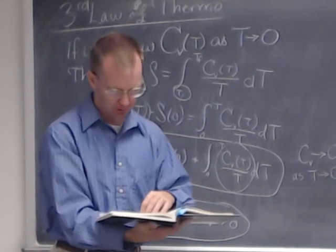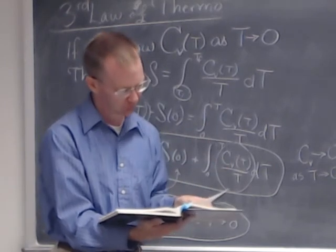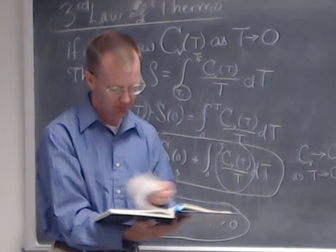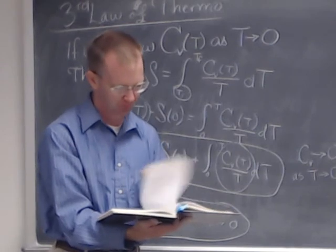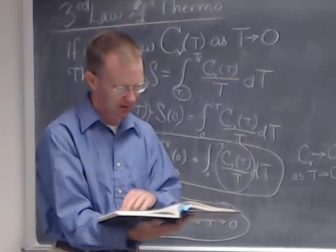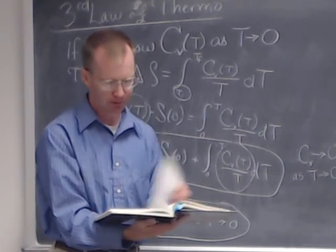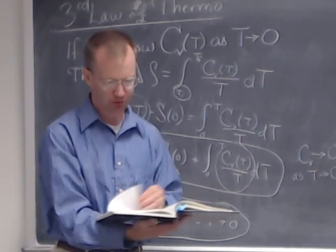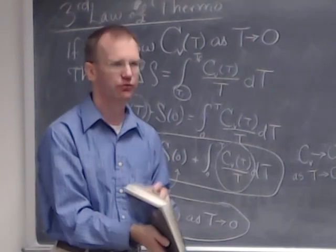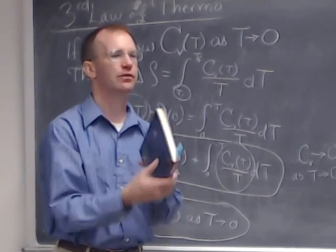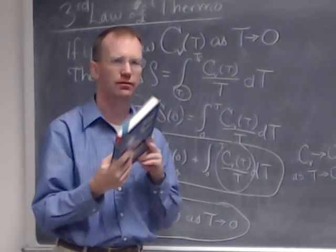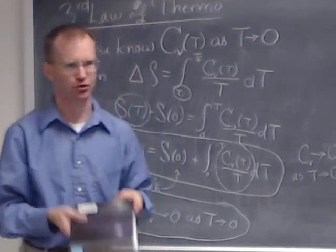In the next class, we'll take a look at macroscopic views of entropy, and then we'll do paramagnetism — one of those interesting systems that turns out to have a possibility of negative absolute temperature.